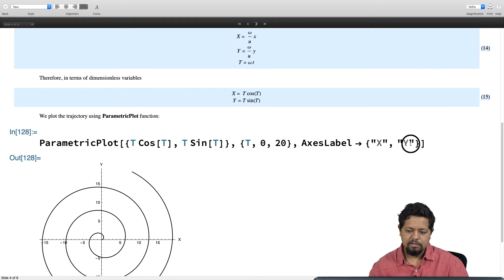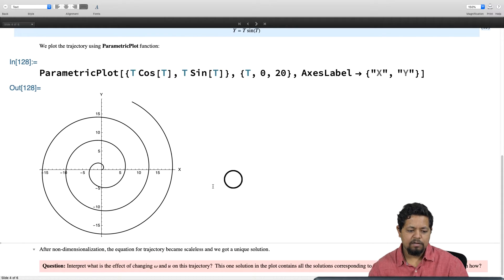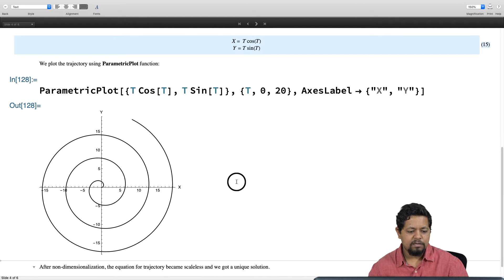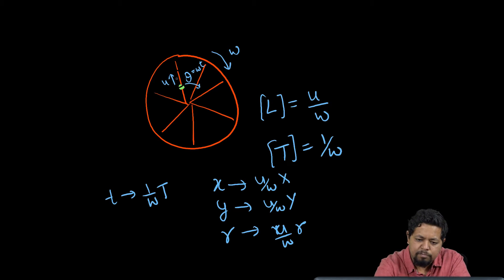When I execute that, I got the outward spiral, and this is exactly what we expect the trajectory of the bead to be on the wheel as the bead moves outwards and the wheel rotates with an angular velocity of omega.